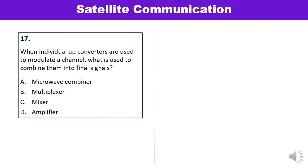Question 17: When individual upconverters are used to modulate a channel, what is used to combine them into the final stage? When individual upconverters are used to modulate a channel, a microwave combiner is used to combine them, and its output is fed to the final amplifier. Answer A is correct.